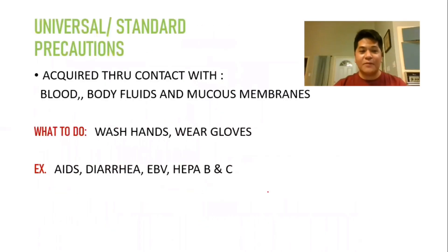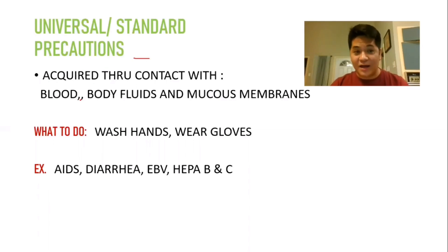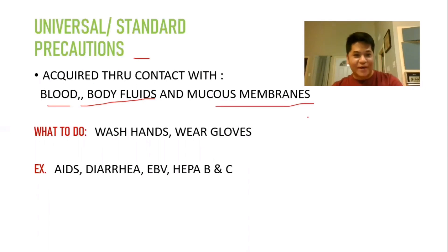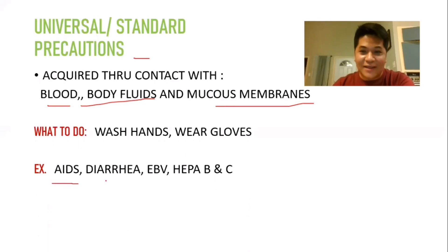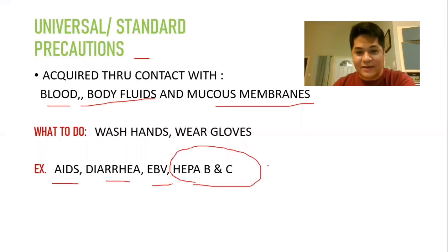Let's talk first about the universal or standard precautions. These are precautions we need to follow because certain diseases are acquired through contact with blood, body fluids, and mucous membranes. Examples of these diseases are AIDS, diarrhea, Epstein-Barr virus, hepatitis B, and hepatitis C. Remember, hepatitis B and hepatitis C are favorites on the exam.